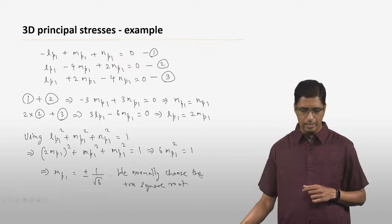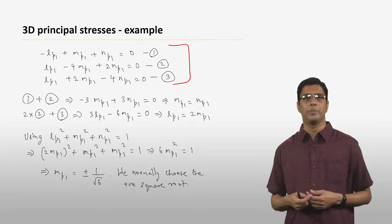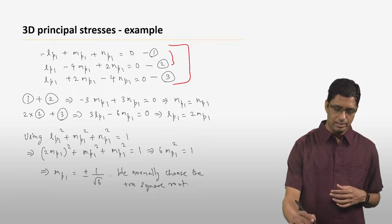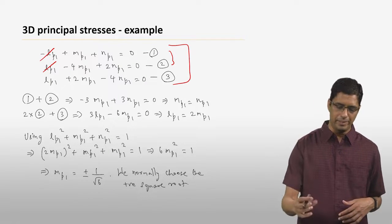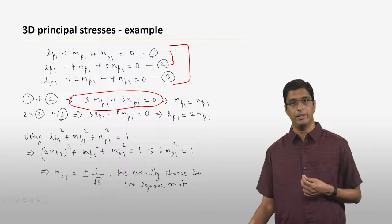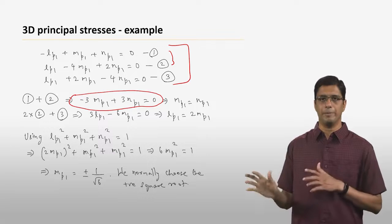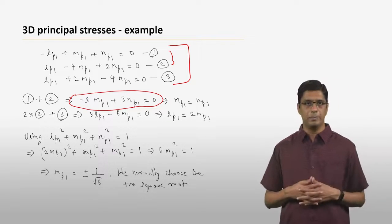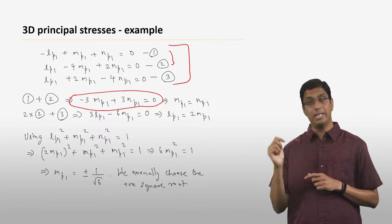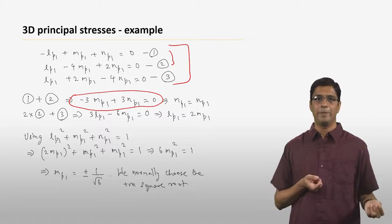The first equation gives: minus lp1 plus mp1 plus np1 equals zero, because the diagonal entry is minus 1. You can use any two of these equations to eliminate variables. Taking equations 1 and 2 and adding them, the lp1 terms cancel, and you get an equation giving mp1 equals np1. We don't know what mp1 is, but we know it equals np1. Then taking the second equation multiplied by 2 and adding to the third equation to eliminate np1, you get 3 lp1 minus 6 mp1 equals 0, which means lp1 equals 2 times mp1.